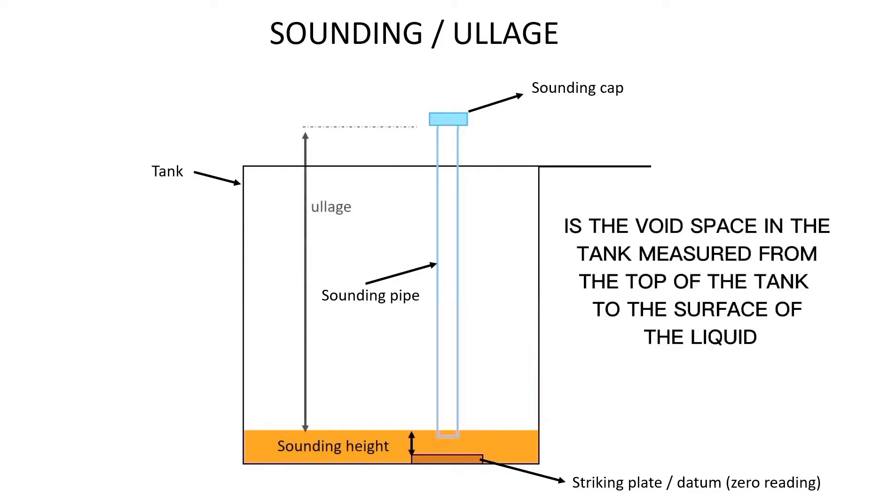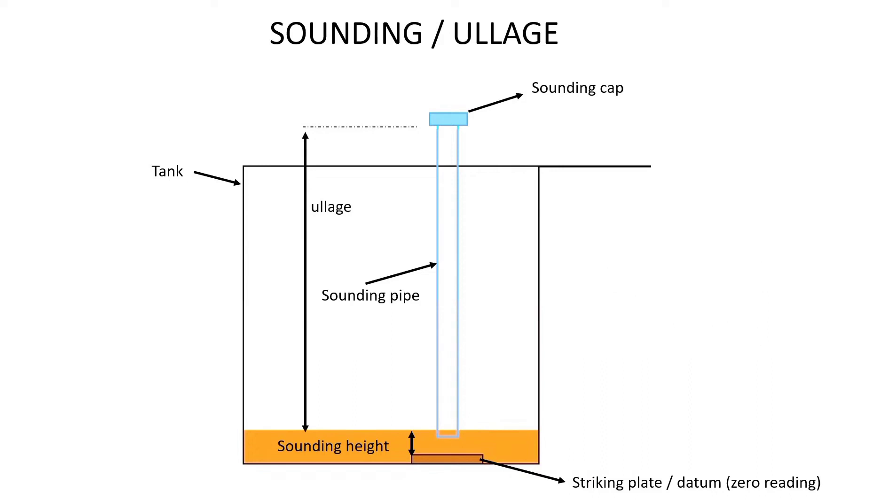Ullage is the void space in the tank measured from the top of the tank to the surface of the liquid. Height from the tip of the sounding pipe to the striking plate bottom. Surface of the oil, a fluid.